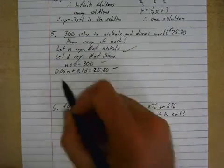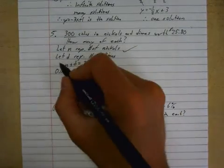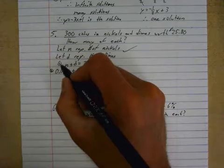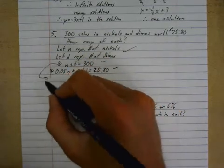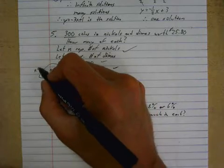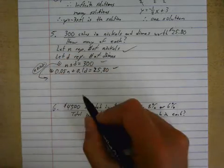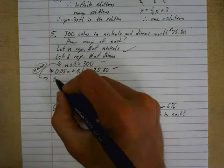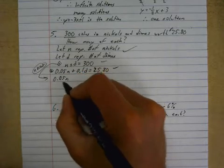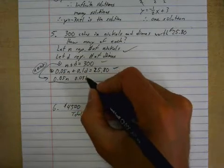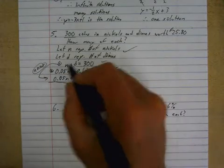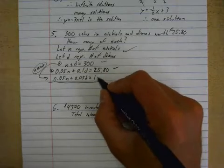Now you're going to solve this thing. In order to solve this, I am always going to take equation one and multiply it by the smaller of the two coefficients. So I'm going to take this and write it underneath here and times everything by 0.05. So n times 0.05 is 0.05n. Hopefully you can see that's about to eliminate. d times 0.05 is 0.05d, that's a plus sign still. 300 times 0.05 is 15.